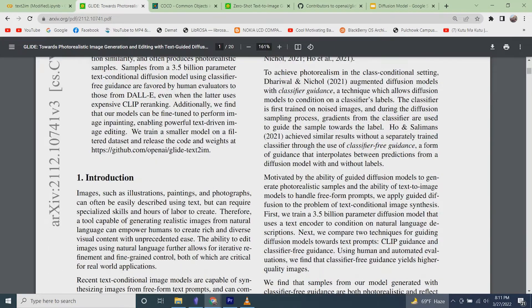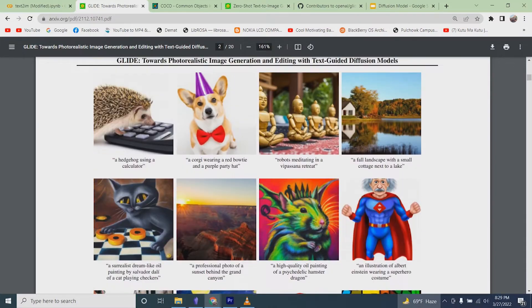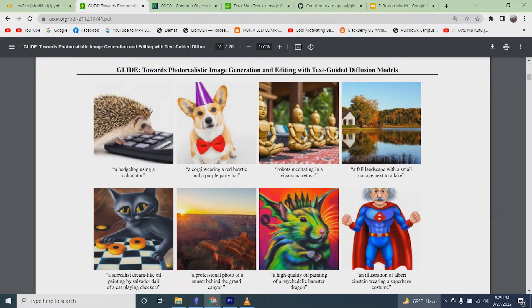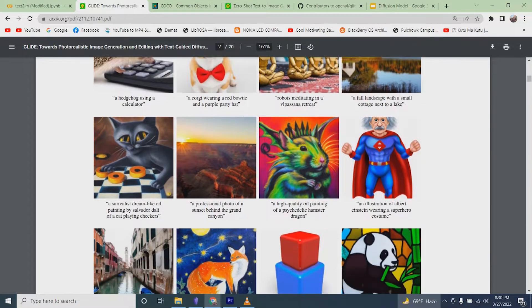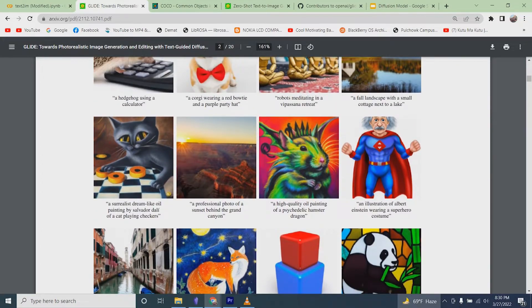If you visit the paper for GLIDE, you will come across many examples that can give you an idea of what's possible with the model. These are the text prompts given and the images generated by the model. We can see here Einstein dressed in a Superman costume and a painting of some psychedelic hamsters.